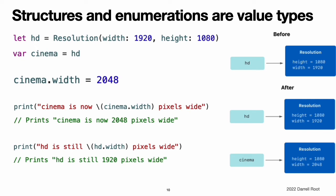Structures and enumerations are value types. A value type is a type whose value is copied when it is assigned to a variable or constant, or when it is passed to a function. All of the basic types in Swift — integers, floating-point numbers, booleans, strings, arrays, and dictionaries — are value types and are implemented as structures behind the scenes. All structures and enumerations are value types in Swift, meaning any structure and enumeration instances you create are always copied when they are passed around in your code.